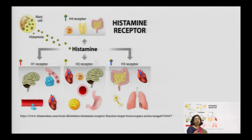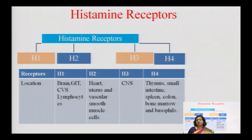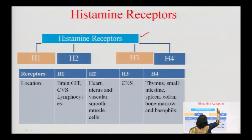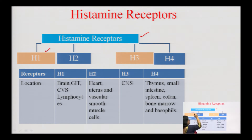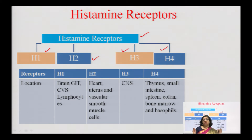Now we will move to histamine receptors. Once histamine is released from mast cells, it will bind with receptors. There are four types of histamine receptors: H1, H2, H3, and H4. In our body, there are four types of histamine receptors present.